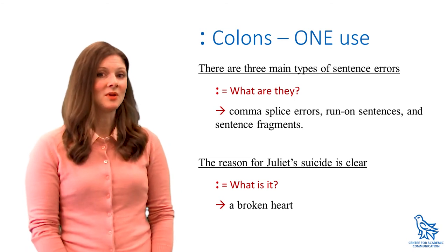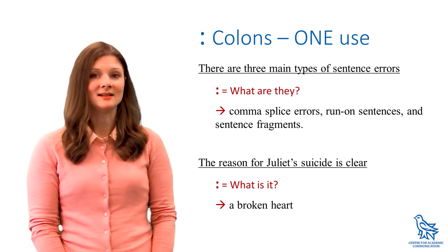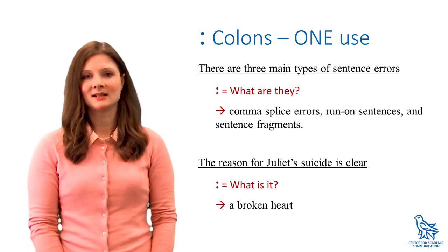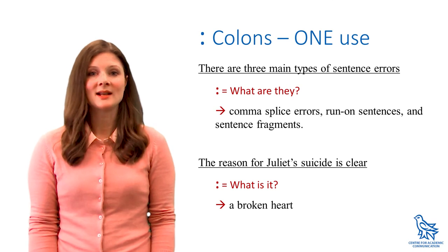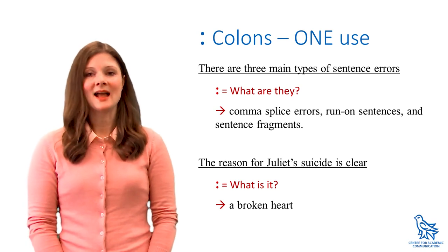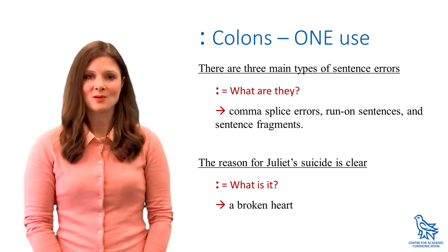In the second example, we can see the sentence 'the reason for Juliet's suicide is clear,' and ask 'what's the reason? what is it?' to get the answer. This is how colons work. Finally, there are a lot of problems that can be caused by just a tiny comma, and the comma splice is just one of them. Check out our additional resource on comma use for more information.